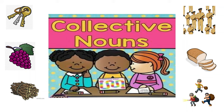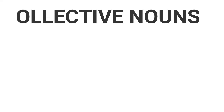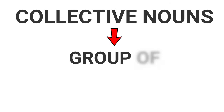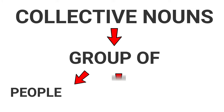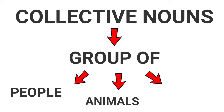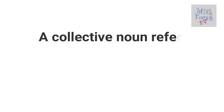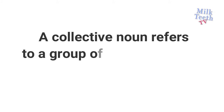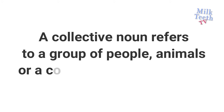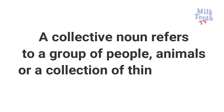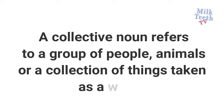Hi my little friends, today we will learn about the collective nouns. Collective nouns are a group of people, animals or things. Therefore, a collective noun refers to a group of people, animals or a collection of things taken as a whole.